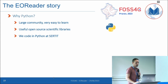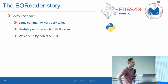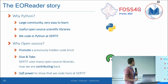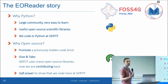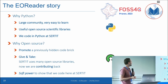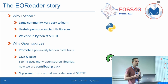Some highlights about the project: why Python? Because Python has a large community, it's very easy to learn, and it has a lot of useful open source scientific libraries. EOReader started in Python so it was natural. And why open source? EOReader was hidden in our pipelines and I decided to promote it and give back — I'm using open source libraries, so this one, which has no equivalent in the open source world, should be promoted. It's also a bit of soft power for Certit, showing that we can code too.